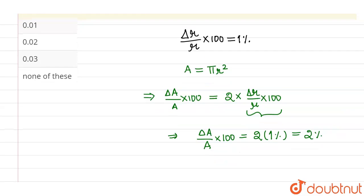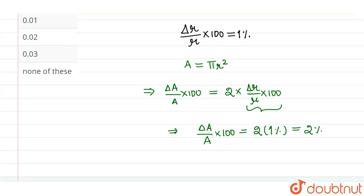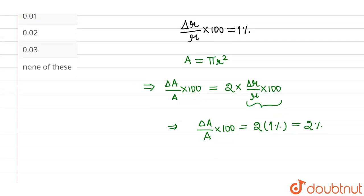error in measurement of area is 2%. Now, if I have to write it in terms of fractions, so this is 2/100, so this can be written as 0.02. So this is the error in the measurement of area.